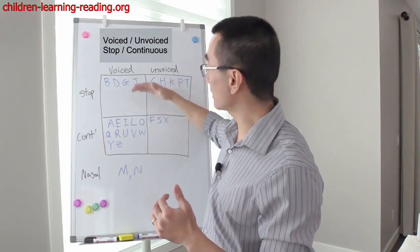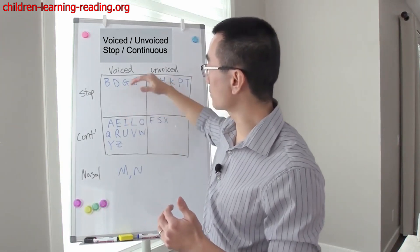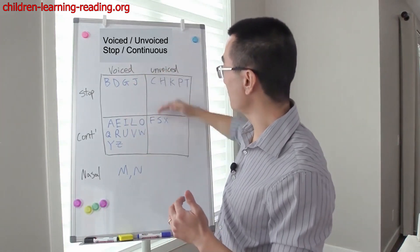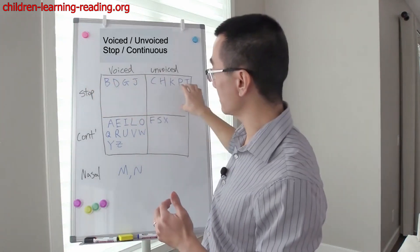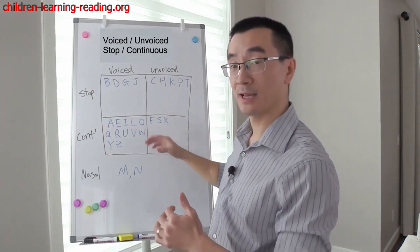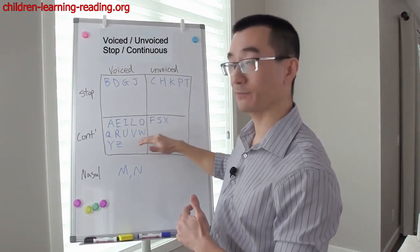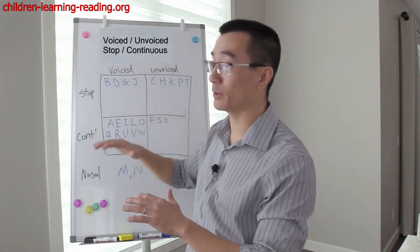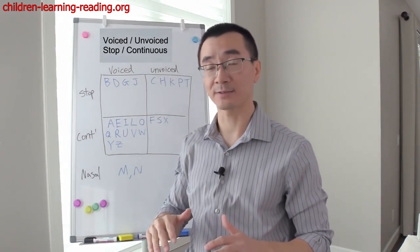Let's take a look at the chart I have here. We have two columns: voiced sounds and unvoiced sounds, and then for the rows we have stop sounds and continuous sounds. I've also categorized all the letters here for you, and I'm going to explain what a voiced and unvoiced sound is.